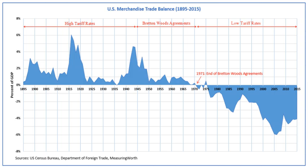Free trade relied on the free convertibility of currencies. Negotiators at the Bretton Woods Conference, fresh from what they perceived as a disastrous experience with floating rates in the 1930s, concluded that major monetary fluctuations could stall the free flow of trade. The new economic system required an accepted vehicle for investment, trade, and payments. Unlike national economies, however, the international economy lacks a central government that can issue currency and manage its use. In the past this problem had been solved through the gold standard, but the architects of Bretton Woods did not consider this option feasible for the post-war political economy.